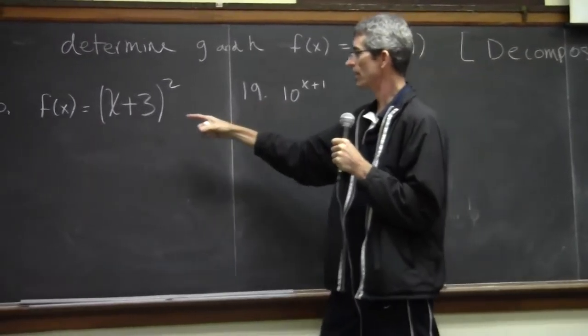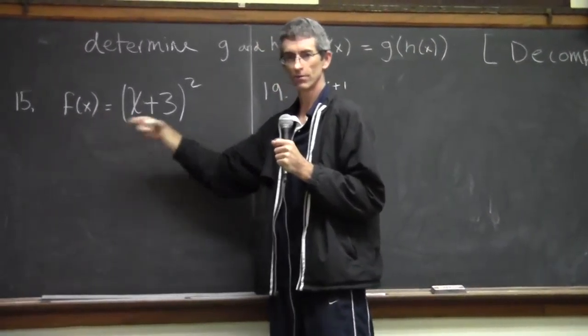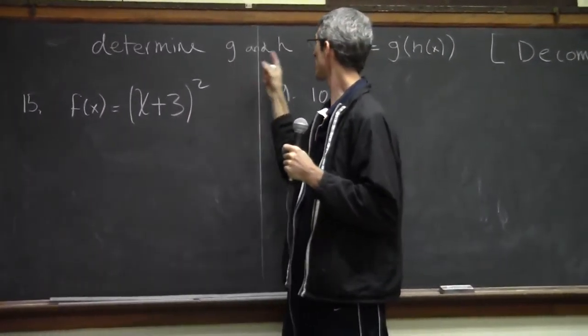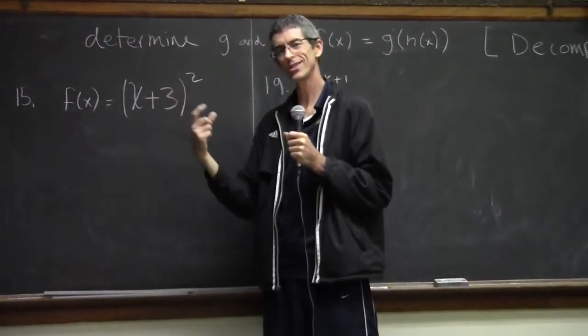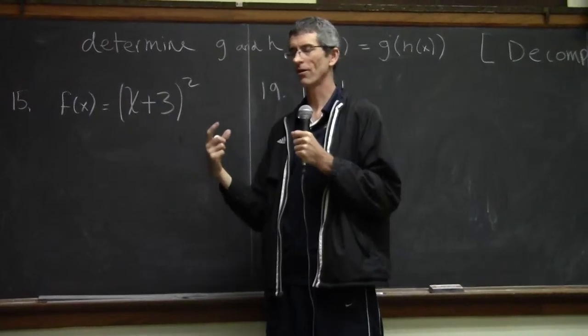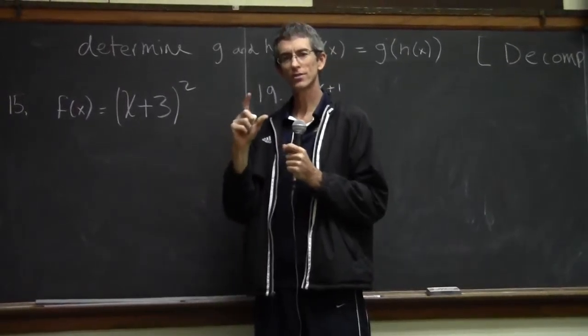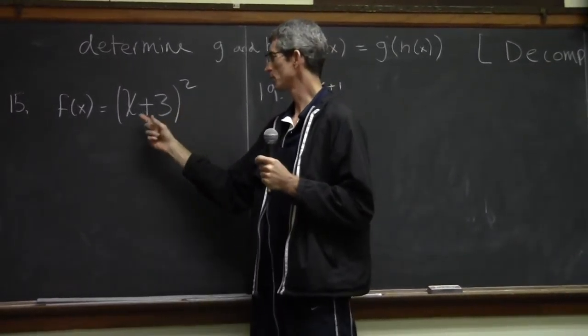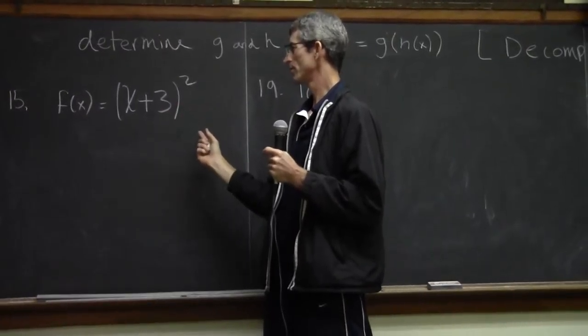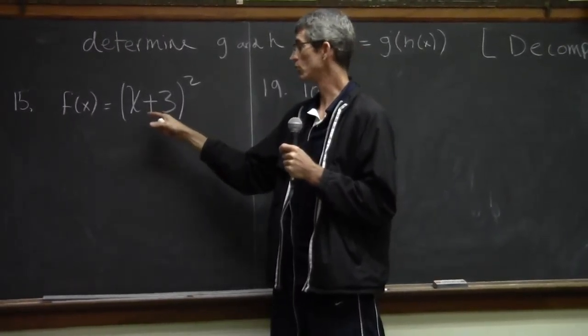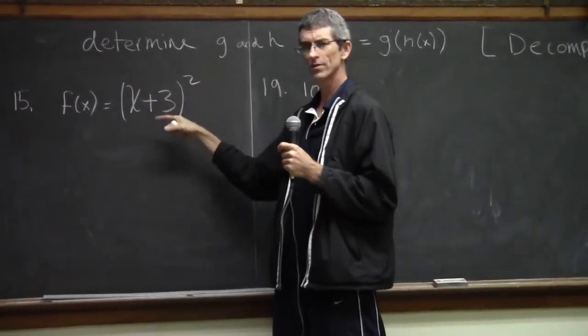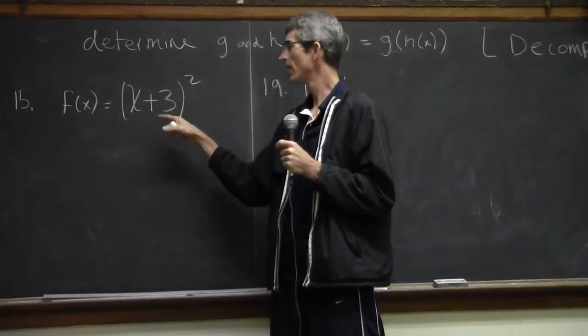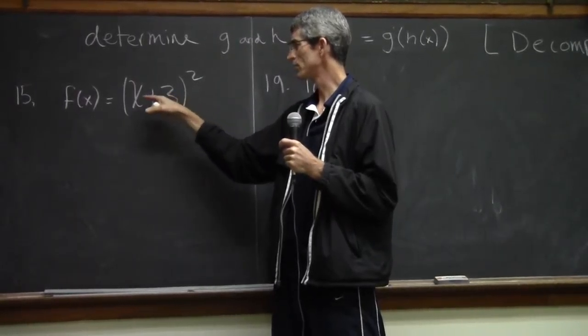Look at problem 15. They're telling us that the final answer, once g and h are composed, is going to come up with this. So what would g and h look like? At first you might be like, oh my god, where do I even start? Just start with order of operations. If you look at this problem, what would you do first? How would you solve that? Let's say x was 2.